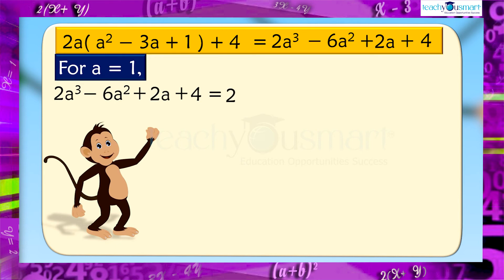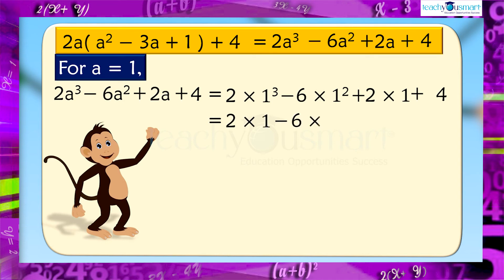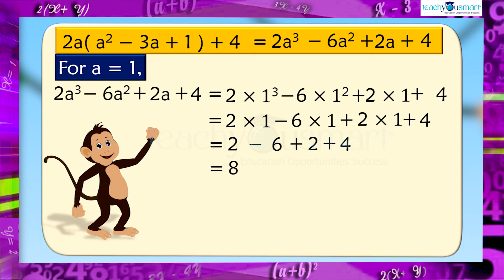For a equals 1: equals 2 multiplied by 1 cubed minus 6 multiplied by 1 squared plus 2 multiplied by 1 plus 4, equals 2 multiplied by 1 minus 6 multiplied by 1 plus 2 multiplied by 1 plus 4, equals 2 minus 6 plus 2 plus 4, equals 8 minus 6, equals 2.